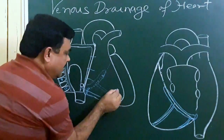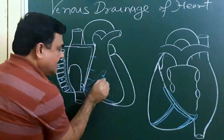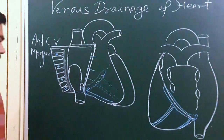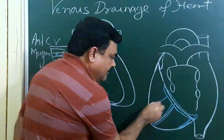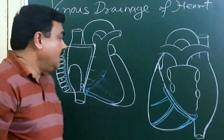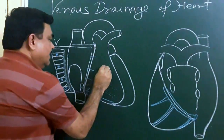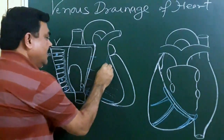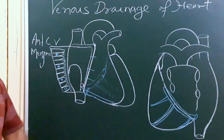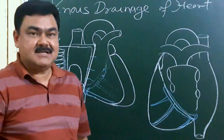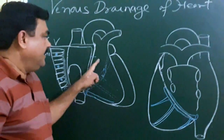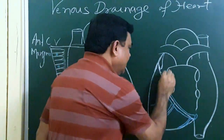Another vein is present on the diaphragmatic surface — this is the posterior vein of the left ventricle. Here is the posterior vein of the left ventricle. Another vein here is the oblique vein of the left atrium, also known as the oblique vein of Marshall. Here you can see the oblique vein of the left atrium.